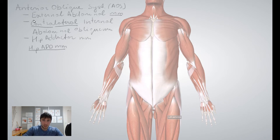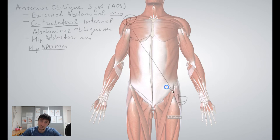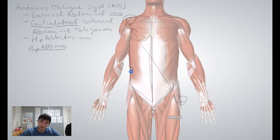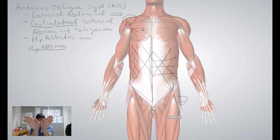These are all quite superficial structures. Right side shoulder towards left side hip — that's the diagonal direction right there. We can see the fiber direction points downwards, kind of like a V. Going layer by layer, external abdominal oblique is kind of like a V shape.